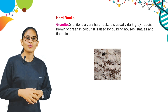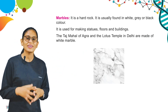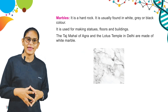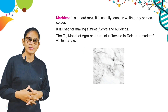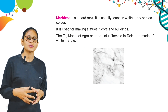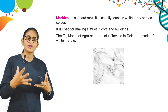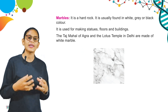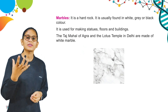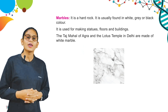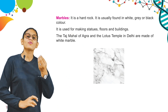Now we have marble. It is a hard rock. It is usually found in white, gray or black color. It is used for making statues, floors and buildings. The Taj Mahal of Agra and Lotus Temple in Delhi are made of white marble.